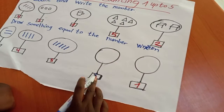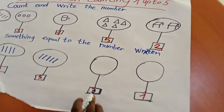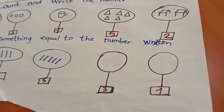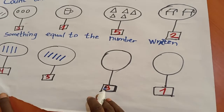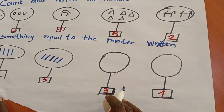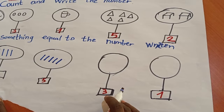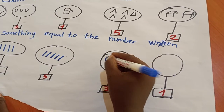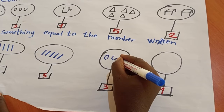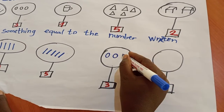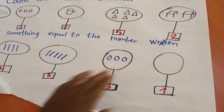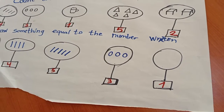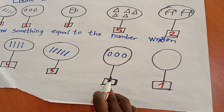Here we have number three. We are going to draw something equal to number three. I choose to draw closed lines. One, two, three. Here we have three closed lines equal to number three.